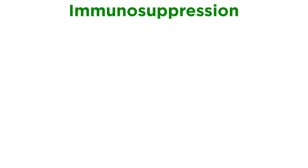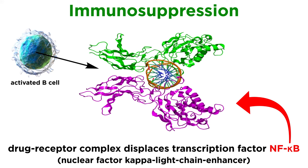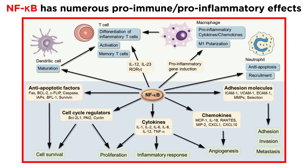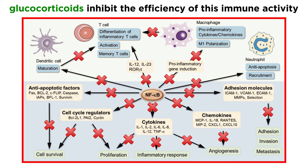Second, let's examine immunosuppressive effects. A main mechanistic driver is thought to arise from the glucocorticoid drug-receptor complex displacing another transcription factor called nuclear factor kappa light chain enhancer of activated B cells, almost always shortened to NF-kappa B. NF-kappa B is an important transcription factor that has numerous pro-immune and pro-inflammatory effects. For example, NF-kappa B increases the expression of genes encoding cytokines such as interleukins and tumor necrosis factor alpha, or TNF-alpha, which induce maturation of T cells, increase their activation, and have important pro-inflammatory effects. Given that glucocorticoids inhibit the efficiency of NF-kappa B to act as a transcription factor, it is quite easy to appreciate the anti-inflammatory and immunosuppressive effects drugs of this class have.